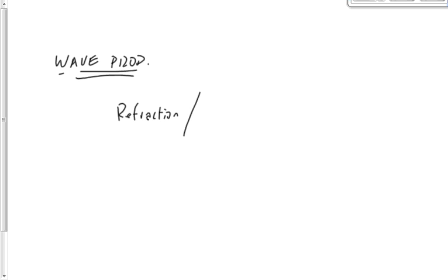The second property is diffraction — the spreading out of a wave. When a wave passes through a small hole in a barrier, it spreads out. Light also undergoes diffraction, therefore light must be a wave.